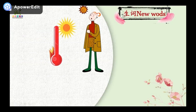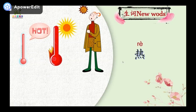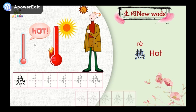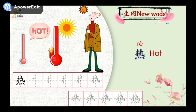Look at the picture and understand the meaning. 热 — it means hot. 热，hot. Now let's learn how to write 热. Follow me. 热 — one, two, three, four, five, six, seven, eight, nine, ten. Notice the key points: the first dot is on the left, and the last three dots are on the right.